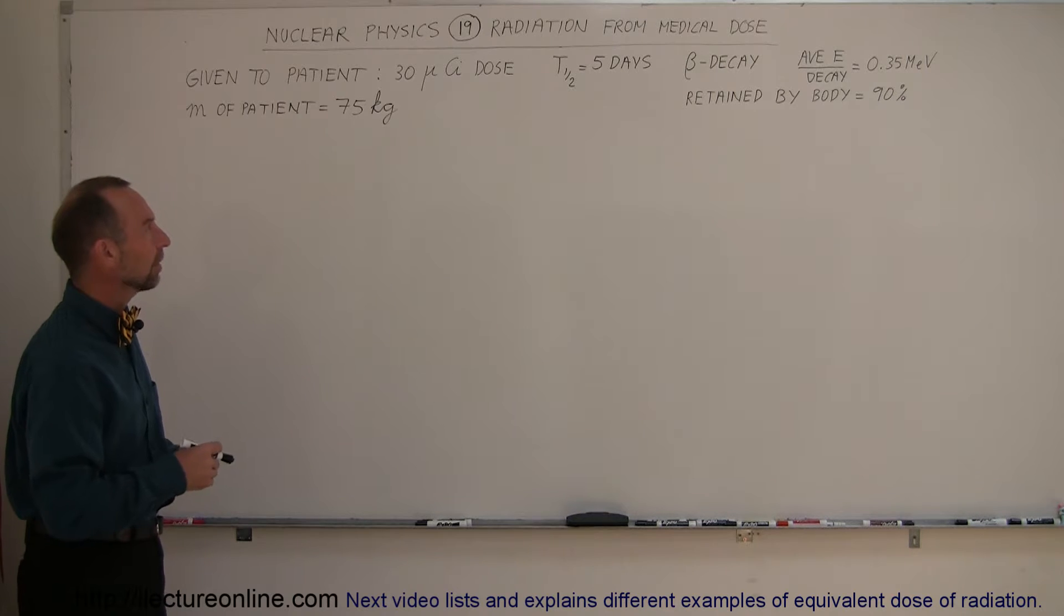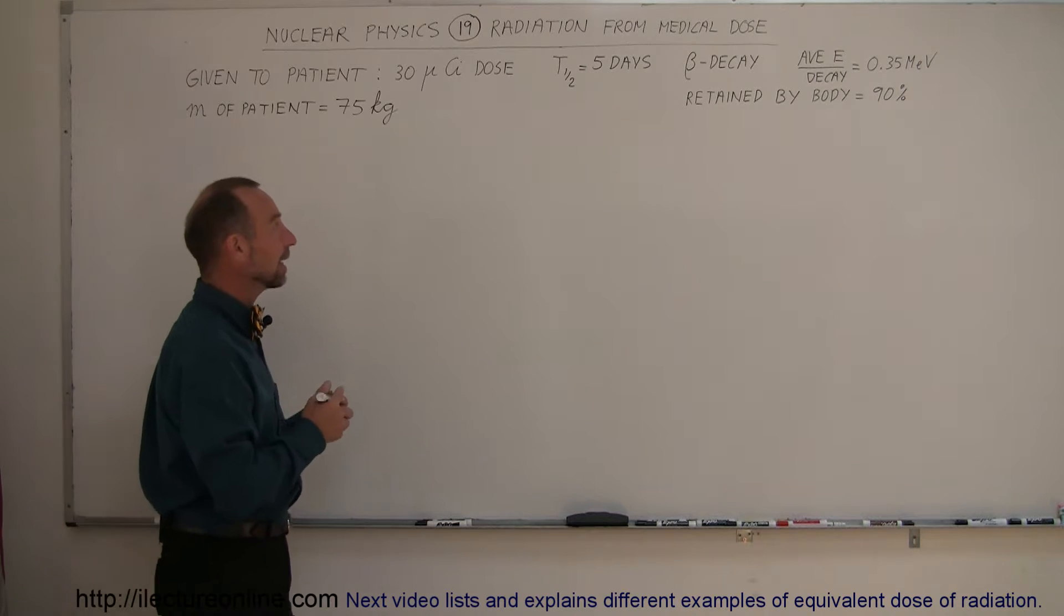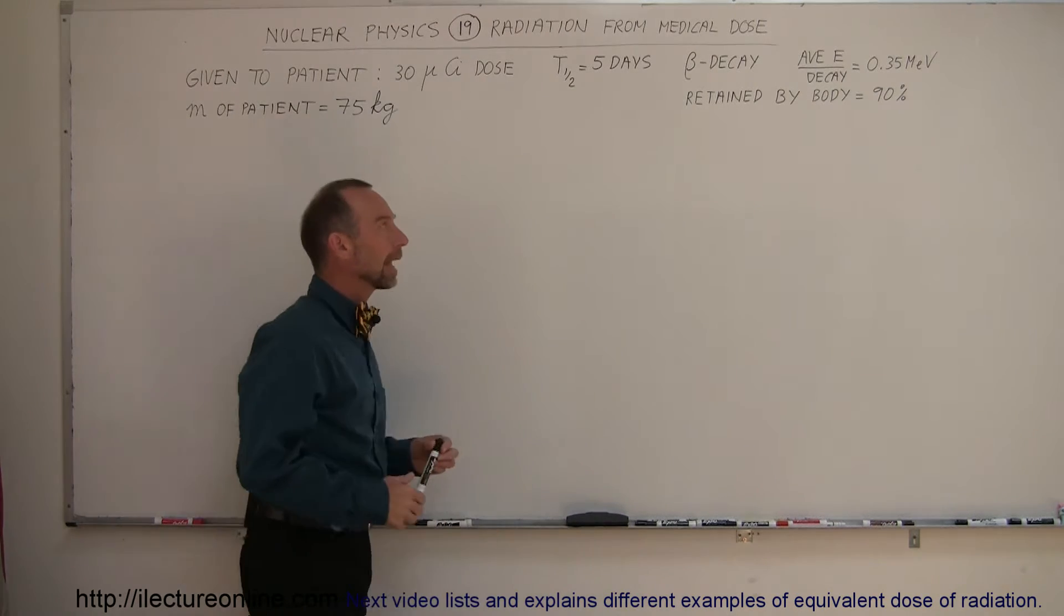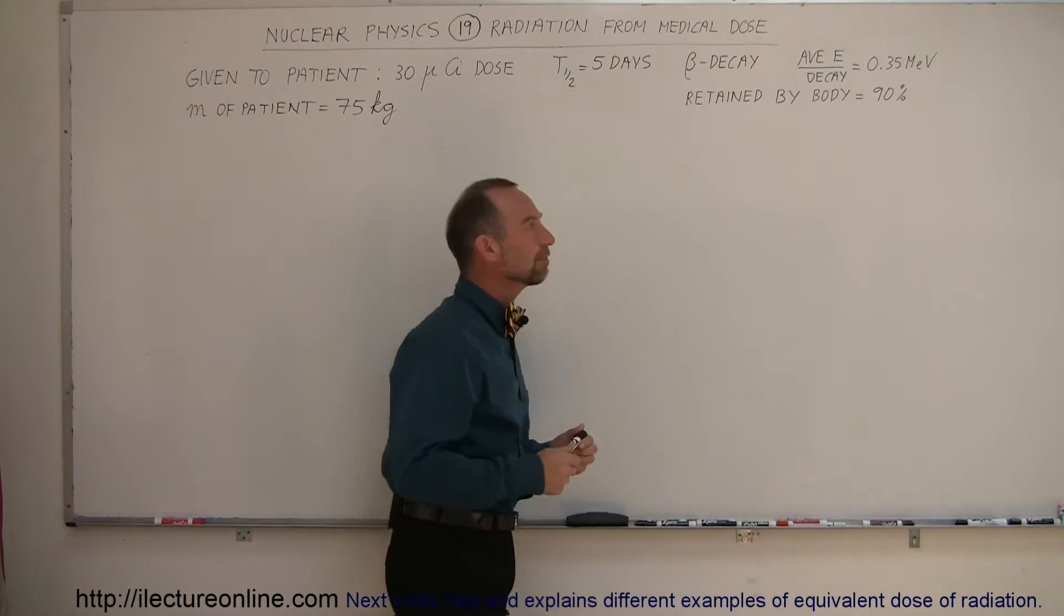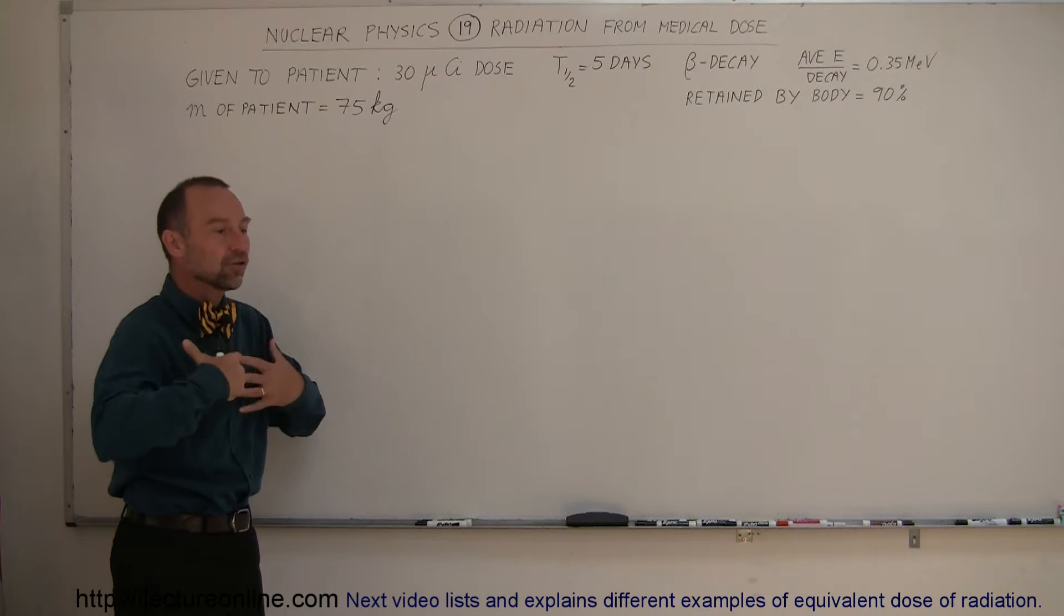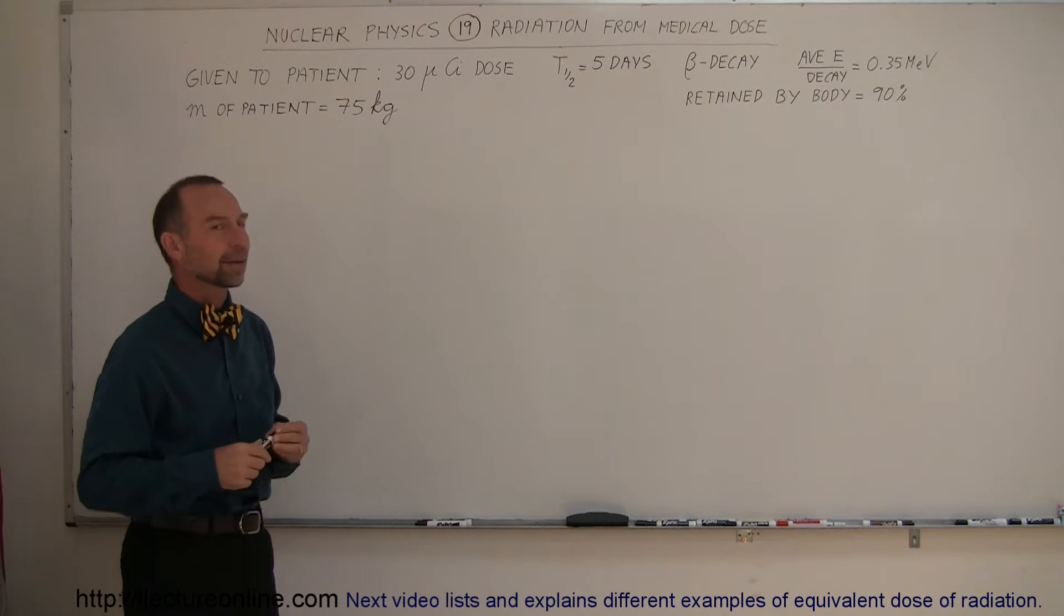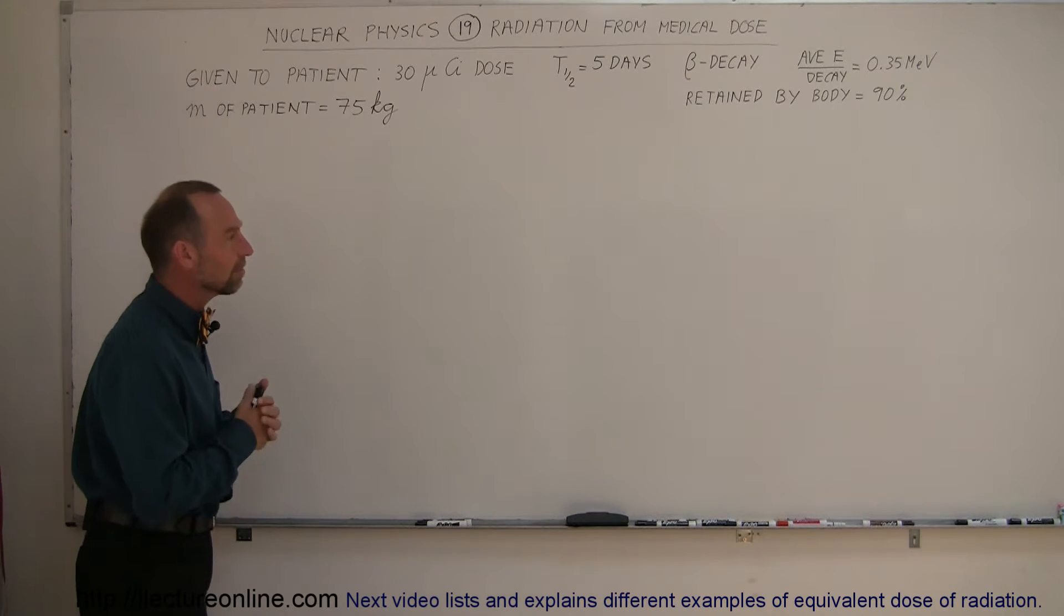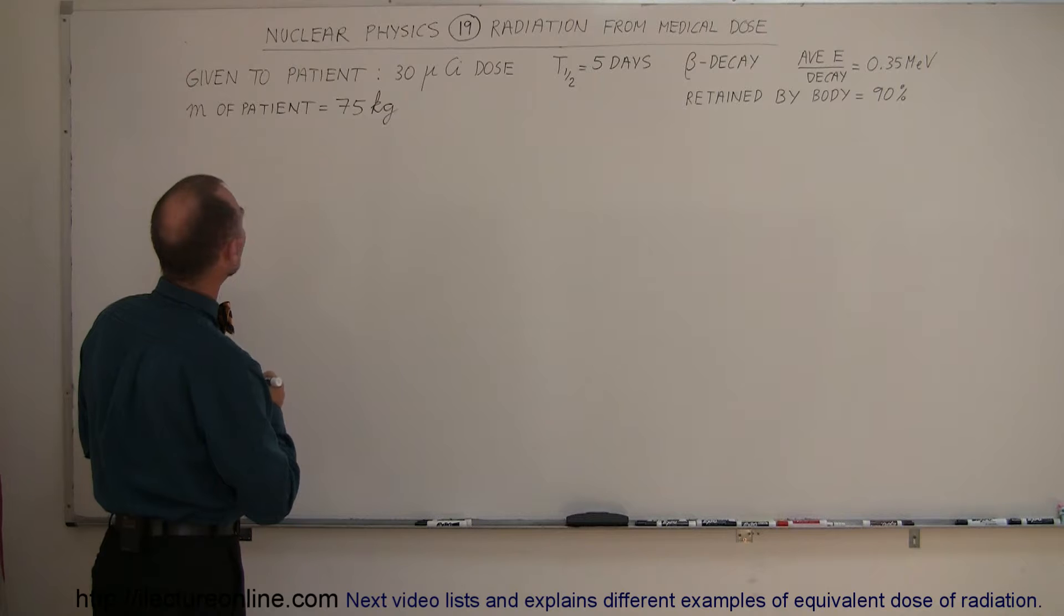Now remember, a curie is 3.7 times 10 to the 10th reactions or decays per second. Let's say that the medicine they give you to produce a radioactive result has a half-life of five days, the decay mechanism is beta decay, and the average energy per decay is 0.35 million electron volts. Let's say that 90% of that decay energy is retained within the body. So what will be the results on your body - what would be the dose that you received and what would be the effective dose?